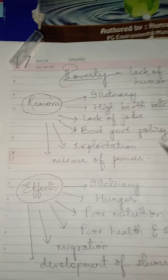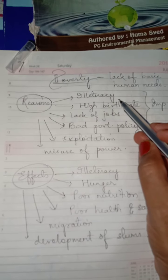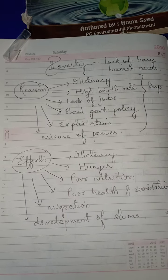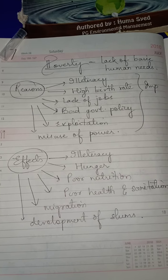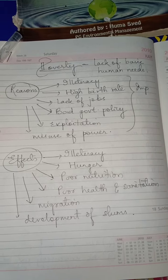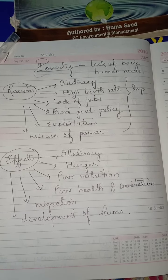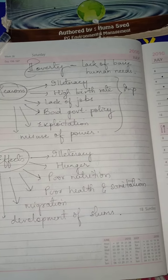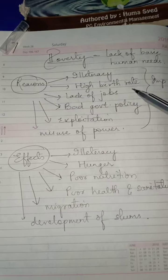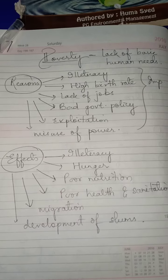The first reason for poverty is illiteracy. When people are not educated, they are unaware of the happenings around them, hardly use the resources properly, and are unable to fulfill basic needs. That is one reason for poverty.